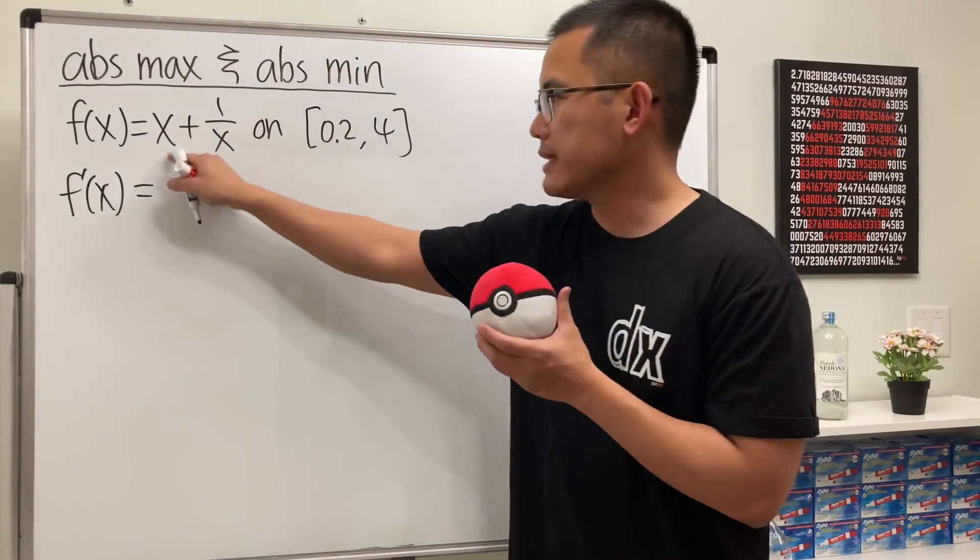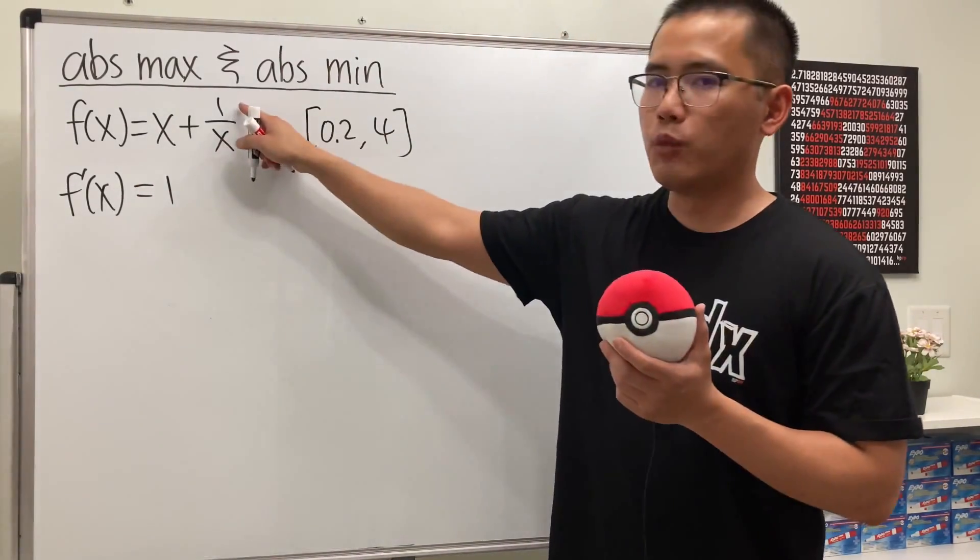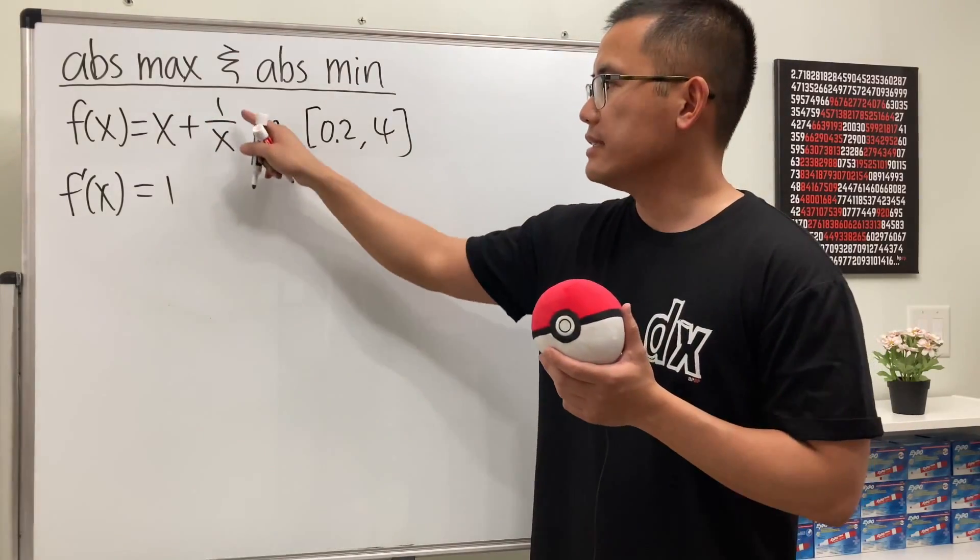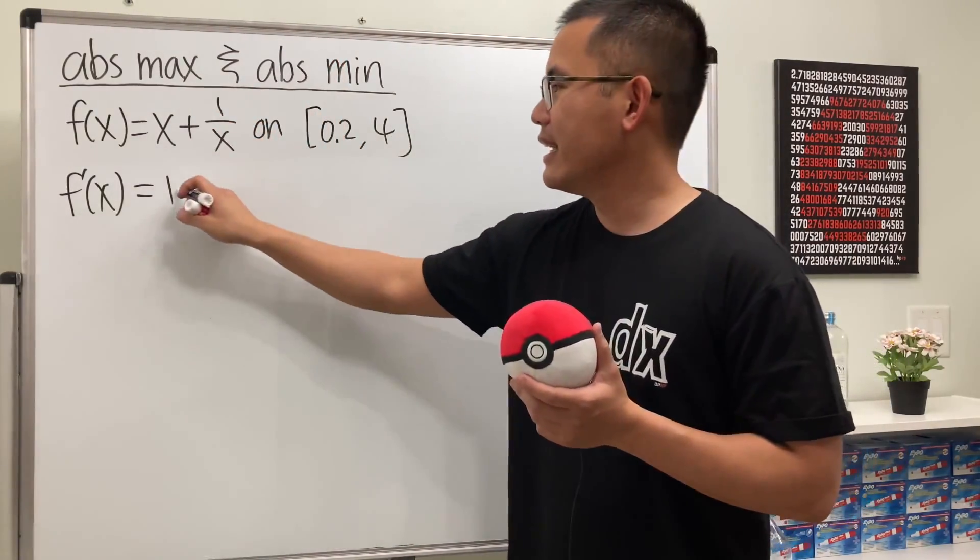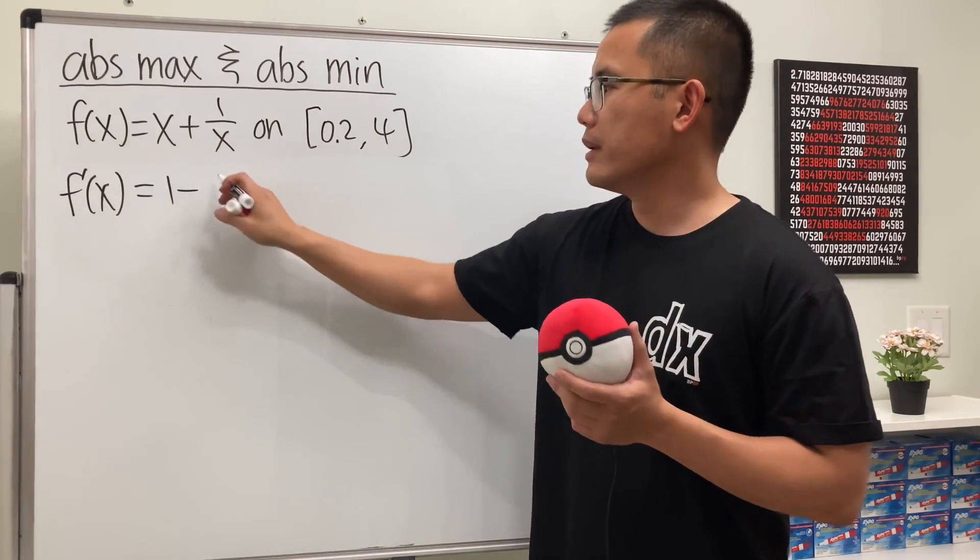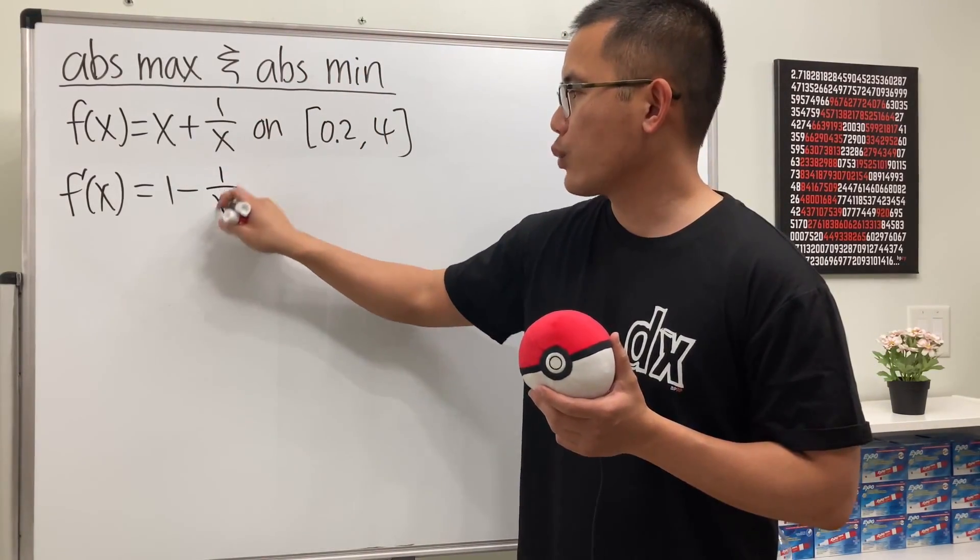The derivative of x is 1. The derivative of 1 over x: write this as x to the negative 1 power. Bring the negative 1 to the front, and then minus 1, which is x to the negative 2. And let's write this as 1 over x squared.